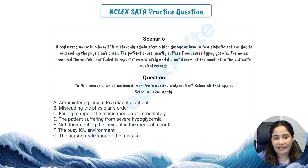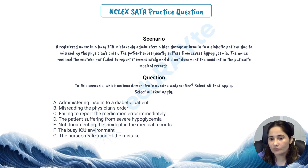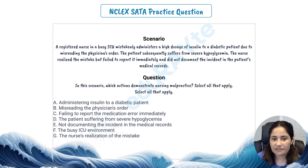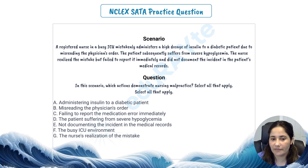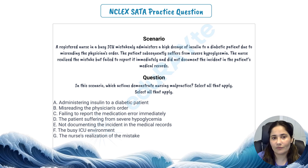Let's look at this NCLEX SATA question. A registered nurse in a busy ICU mistakenly administers a high dose of insulin to a diabetic patient due to misreading the physician's order. The patient subsequently suffers from severe hypoglycemia. The nurse realized the mistake but failed to report it immediately and did not document the incident in the patient's medical records. Which actions demonstrate nursing malpractice? Select all that apply. Please take a moment to think about each option and pause the video — when you are ready, we will discuss the answers together.